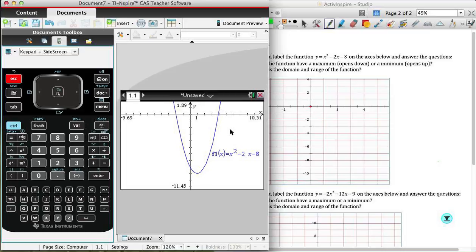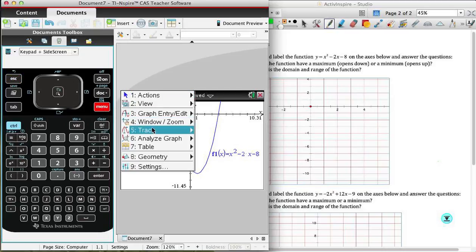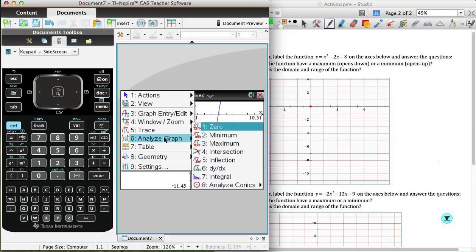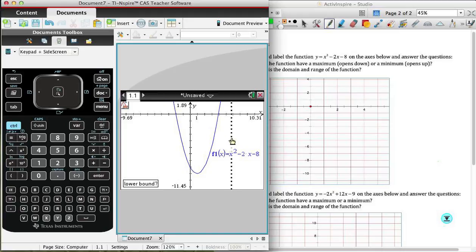Okay. And so we're going to begin by going into the menu, and we have the analyze graph function. And in the analyze graph function, the first thing we're going to do in this case, as you can see from the graph, we have a parabola that opens up. So we're looking for a minimum. So I'm going to click on that. It asks for a lower bound. So I come to a point to the left of where my turning point is.